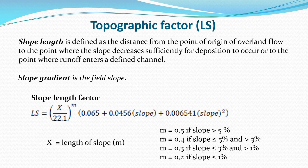To estimate LS, the equation is: LS = (x / 22.1)^m × (0.065 + 0.0456 × slope + 0.006541 × slope²), where x is the slope length. The exponent m = 0.5 if the slope is greater than 5 percent, and m = 0.4 if the slope is less than or equal to 5 percent and greater than 3 percent.